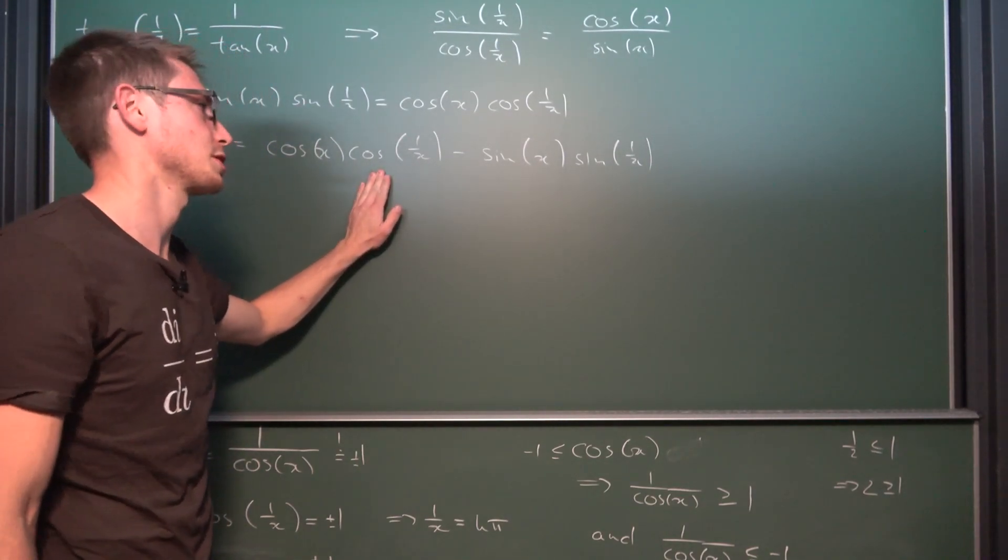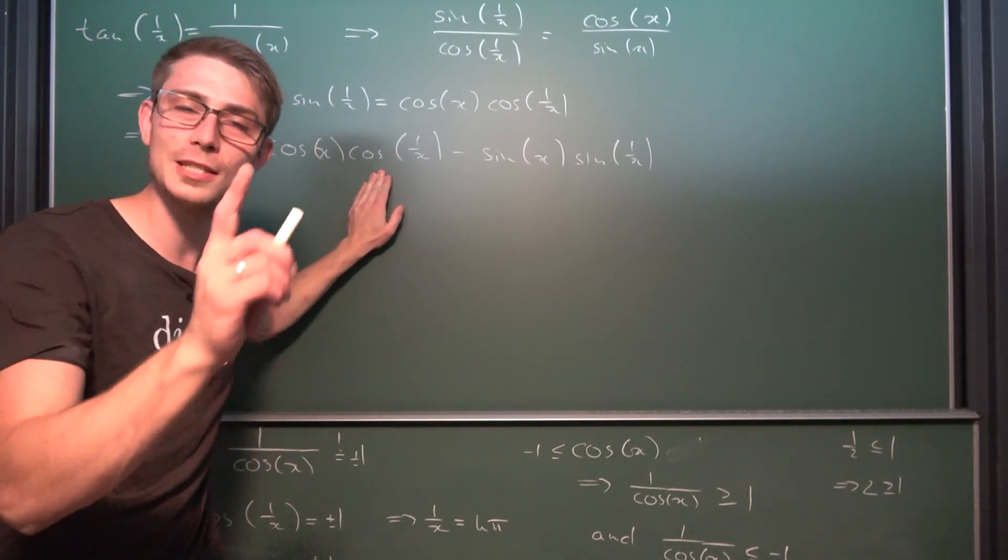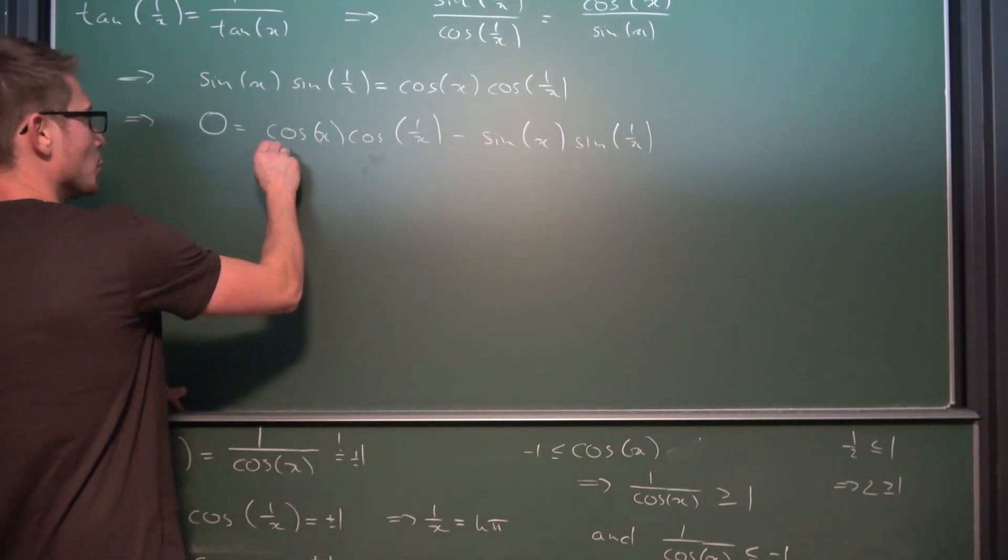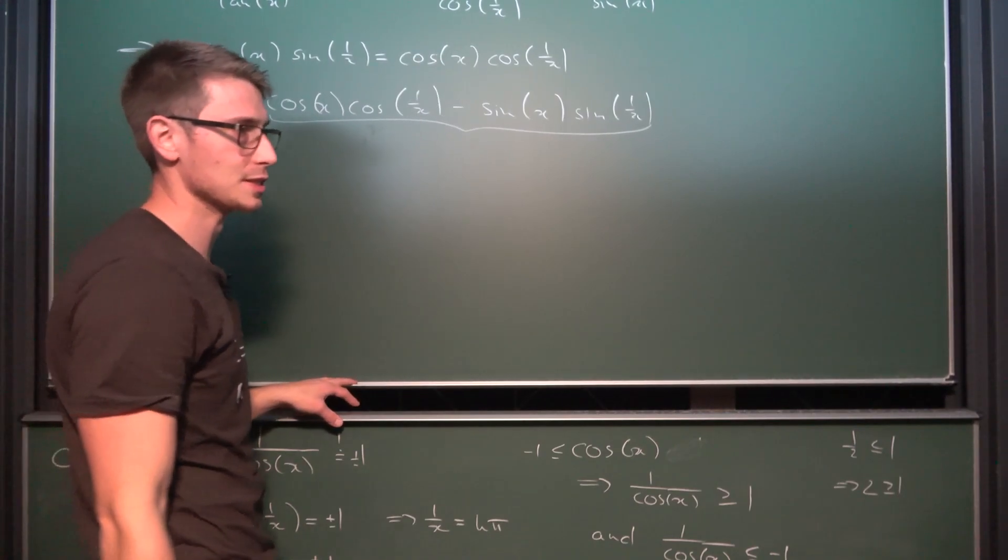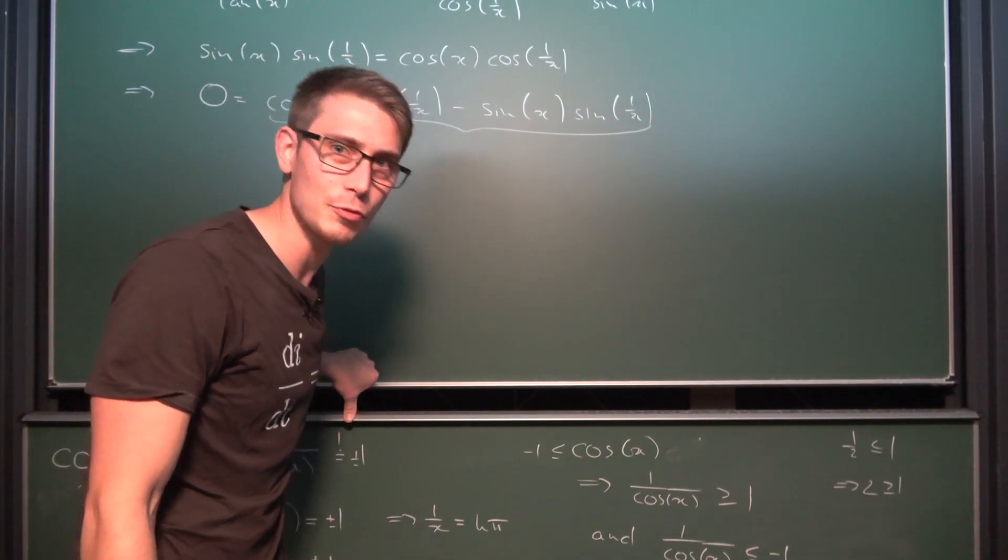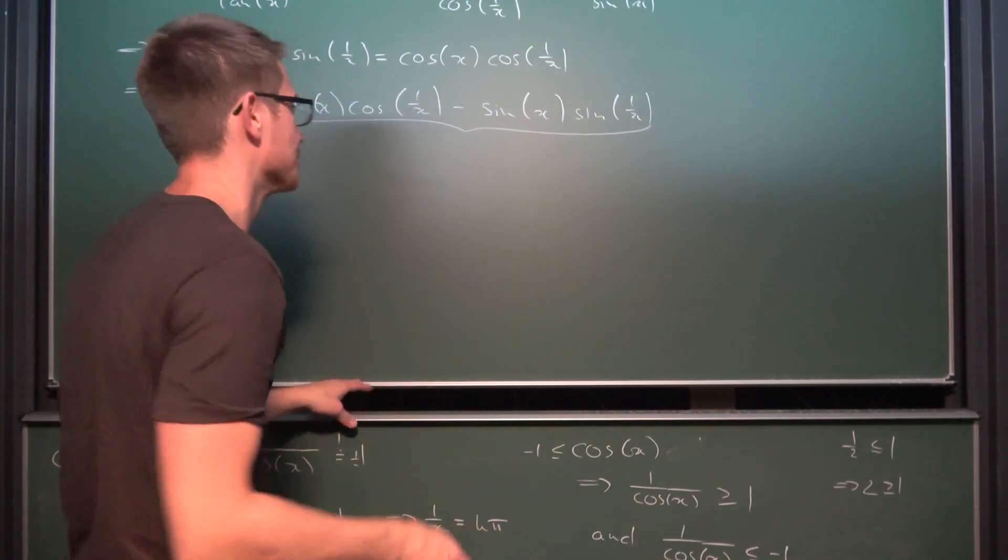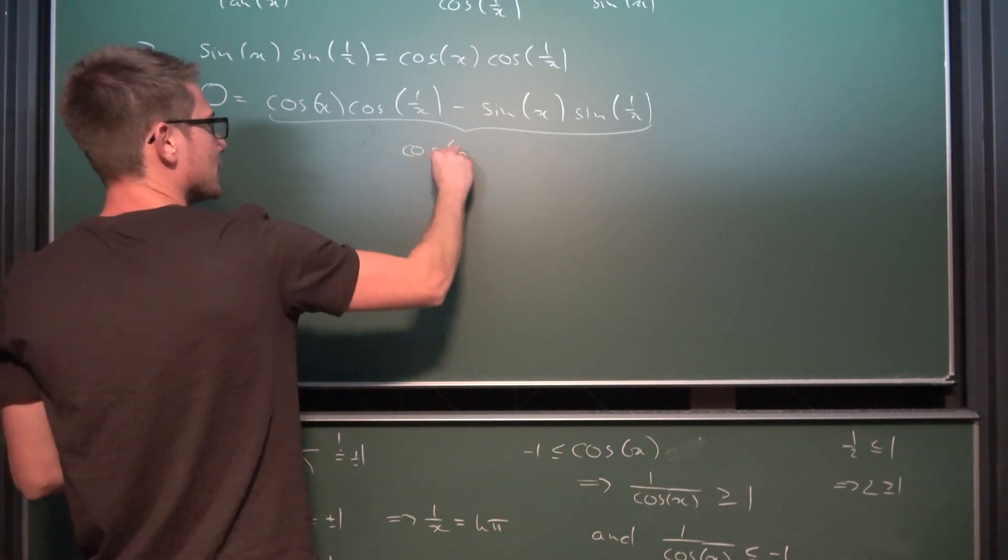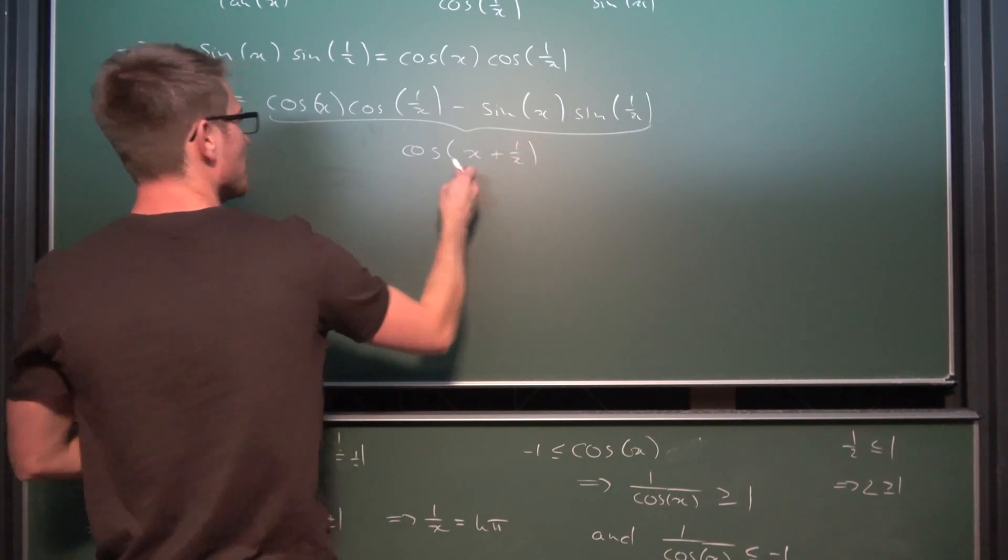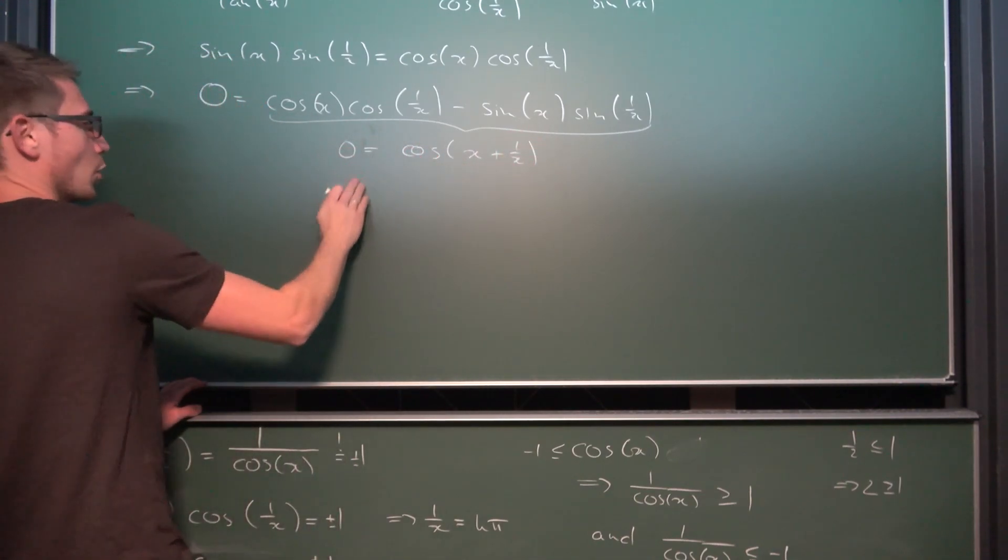Now you might already see something. If you're familiar with trigonometric identities you are going to think oh my goodness this is amazing. Now what we're going to do is we are going to subtract this part on both sides. Giving us 0 being equal to the cosine of a times the cosine of b minus the sine of a times the sine of b. Now this right here is nothing other than the good old addition formula for the cosine. I have derived those before using matrices. Check out my complex numbers but different series. This is just the addition formula for the cosine. Leaving us with cosine of x plus 1 over x being equal to 0 overall.